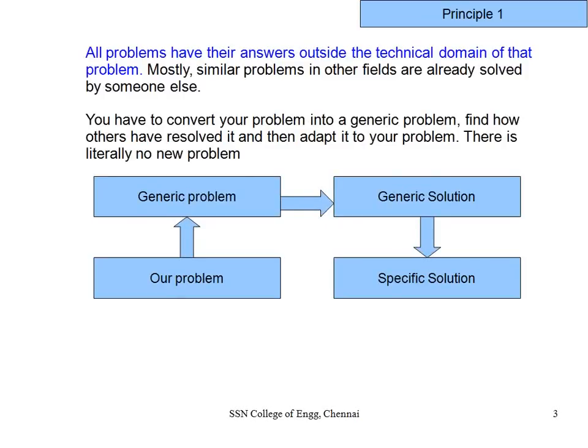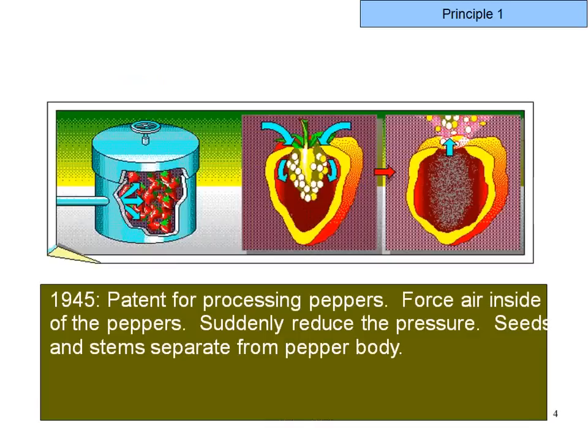There are three principles. The first principle is: all problems have their answers outside the technical domain of that problem. Similar problems in other fields are already solved by someone else. Your creativity lies in converting your problem into a generic problem, finding out how others have solved it, and then adapting it to your specific solution. In other words, there is no new problem — everything is already solved.